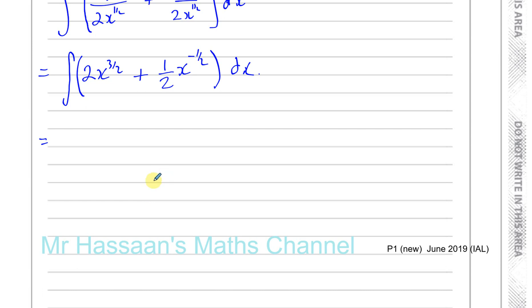So the first thing you do is add 1 to the power, so that's 2x to the power of, now 3 over 2 plus 1 is 3 over 2 plus 2 over 2, which is 5 over 2. So you add 1 to the power, and then you divide by the new power. So I'll just write it like this.